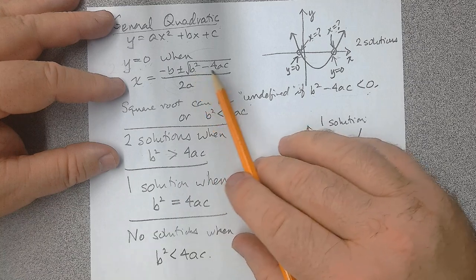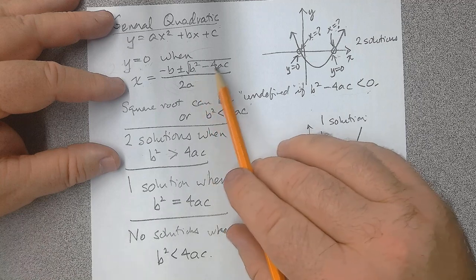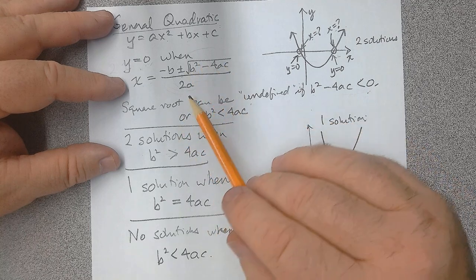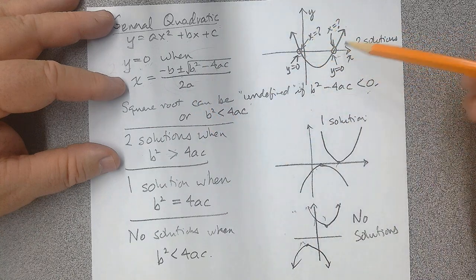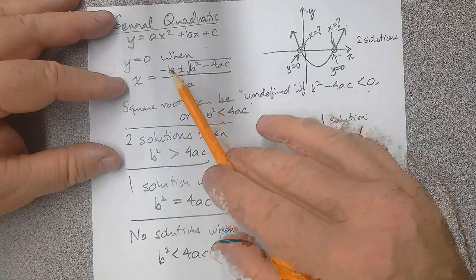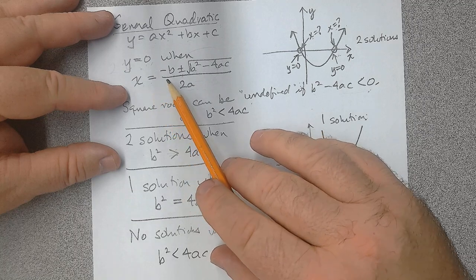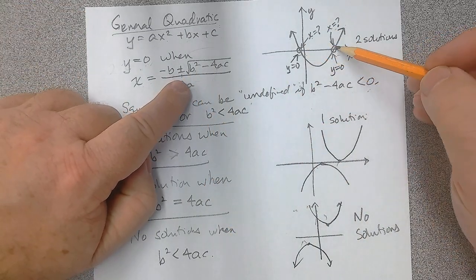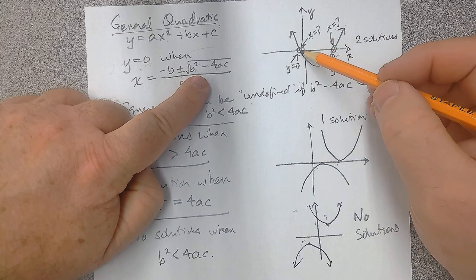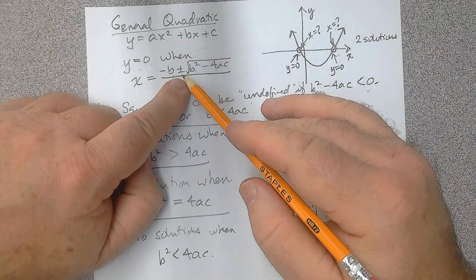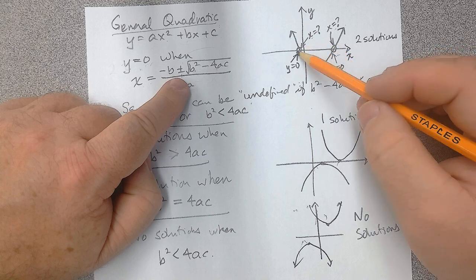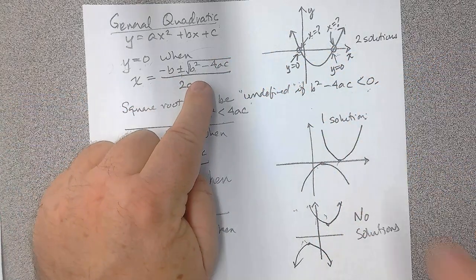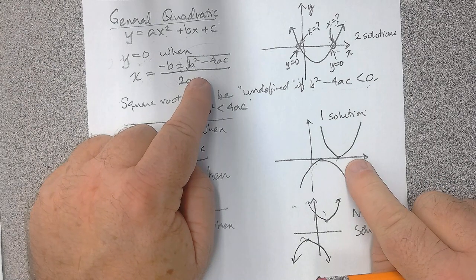Now, b squared minus 4ac is the contentious part of this formula. It's possible that b squared minus 4ac might end up as a negative number, and if we have a negative number under a square root, we won't be able to plot it — it won't be a solution. Also, the plus or minus tells us that adding the square root gives one answer and subtracting it gives another, giving us the possibility of two answers.